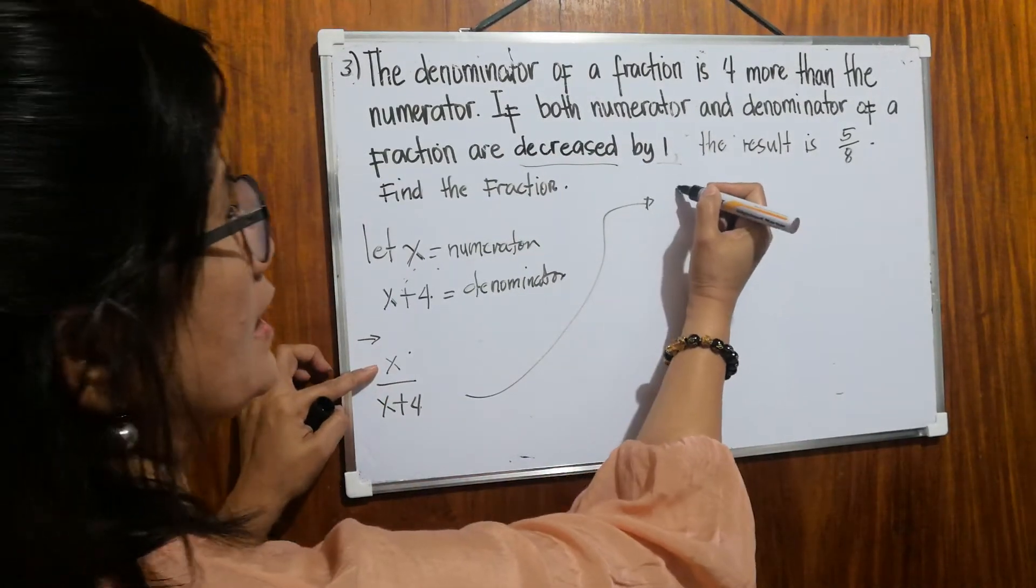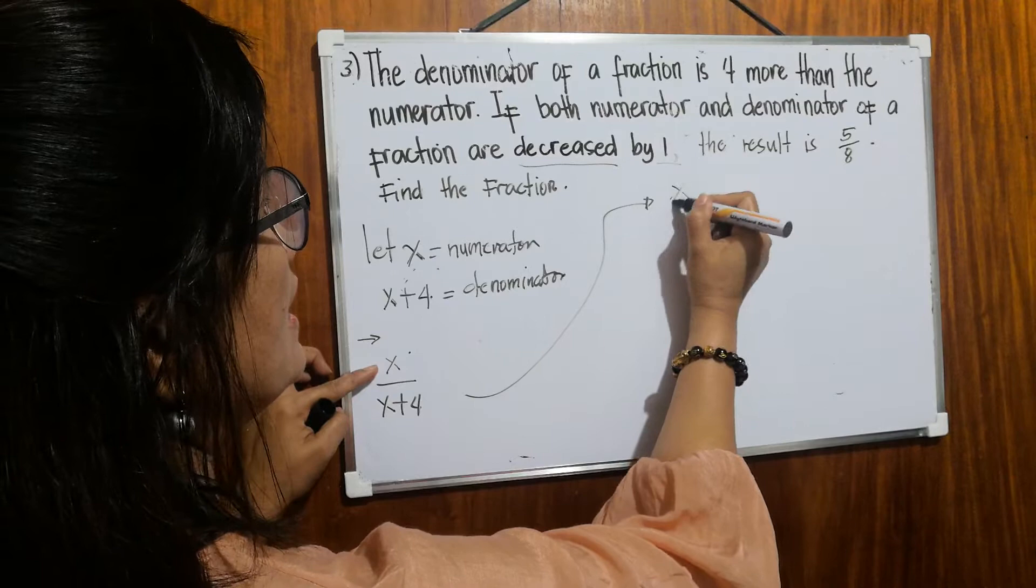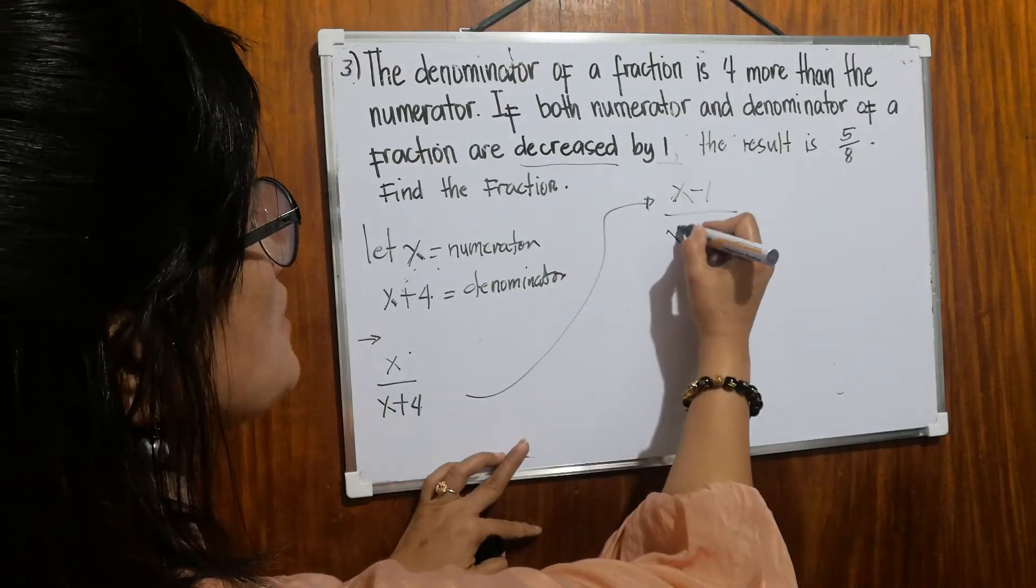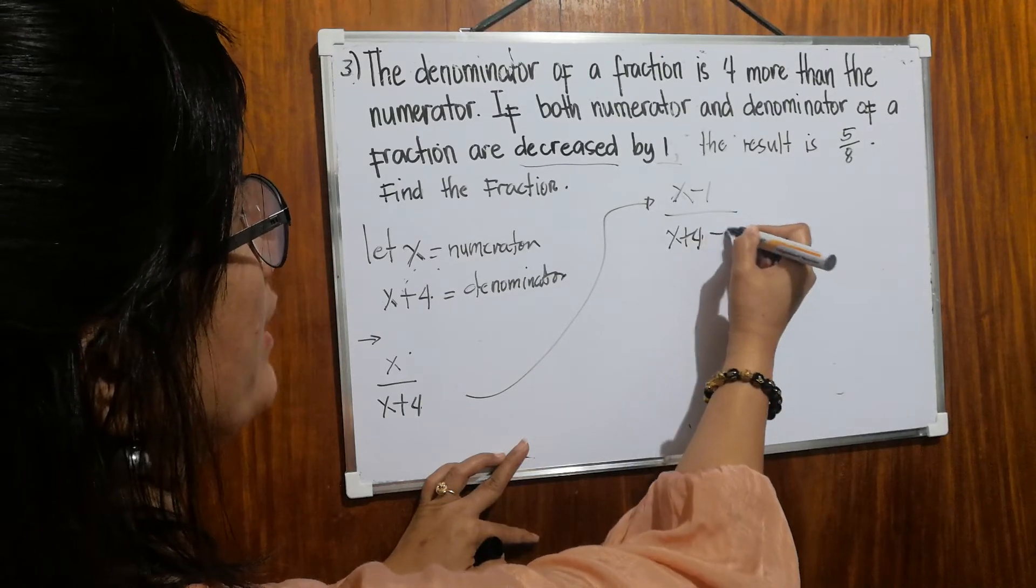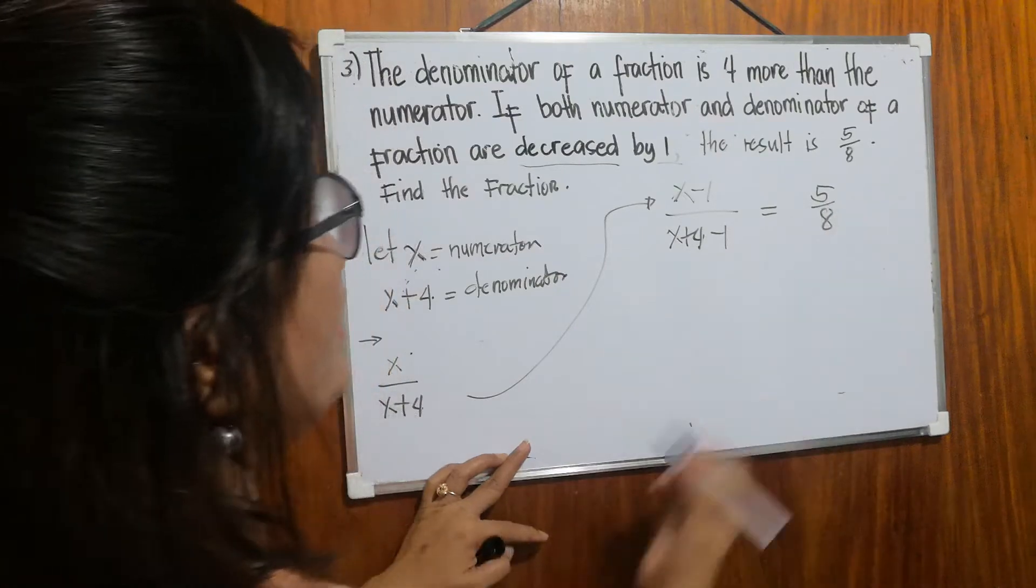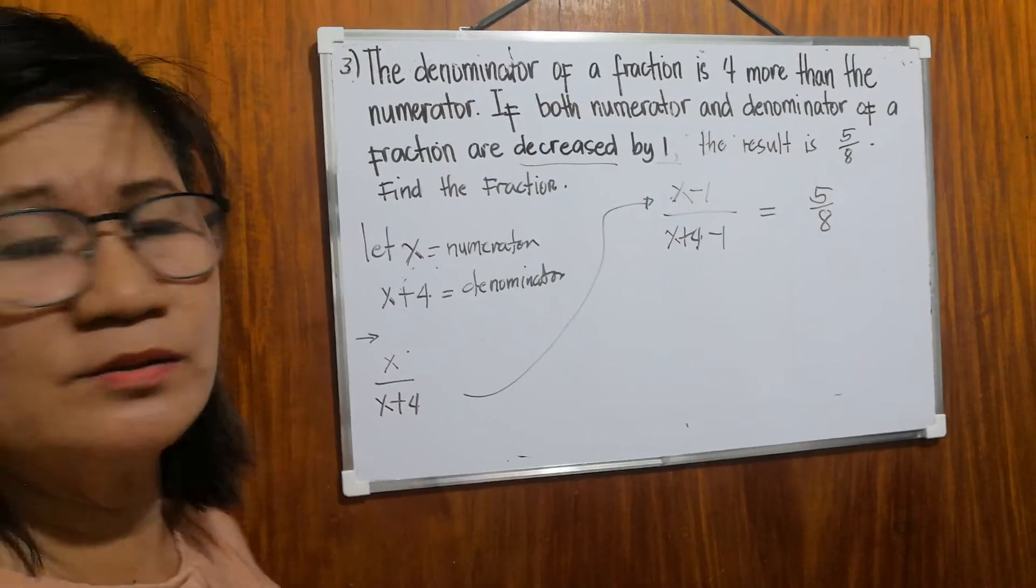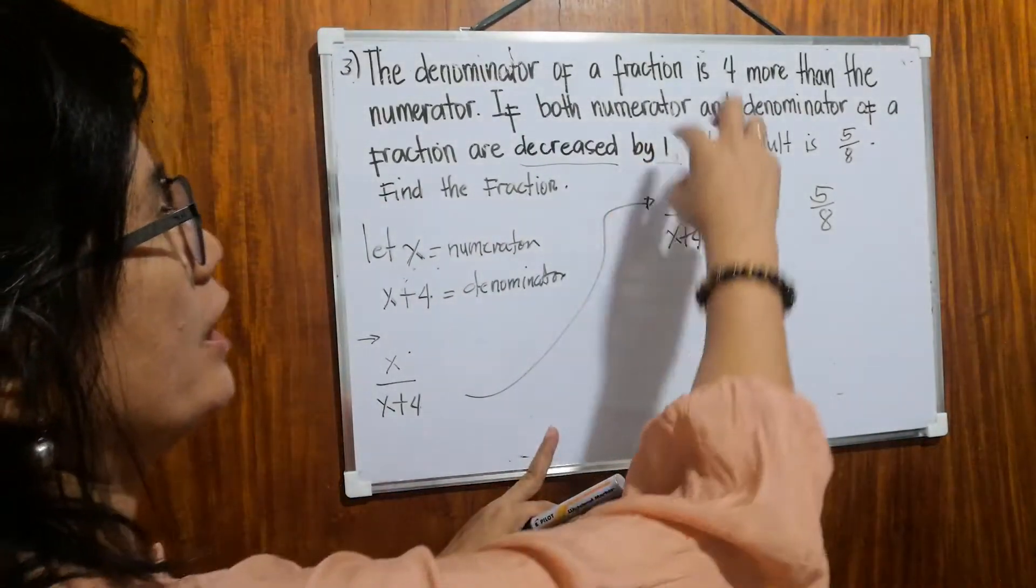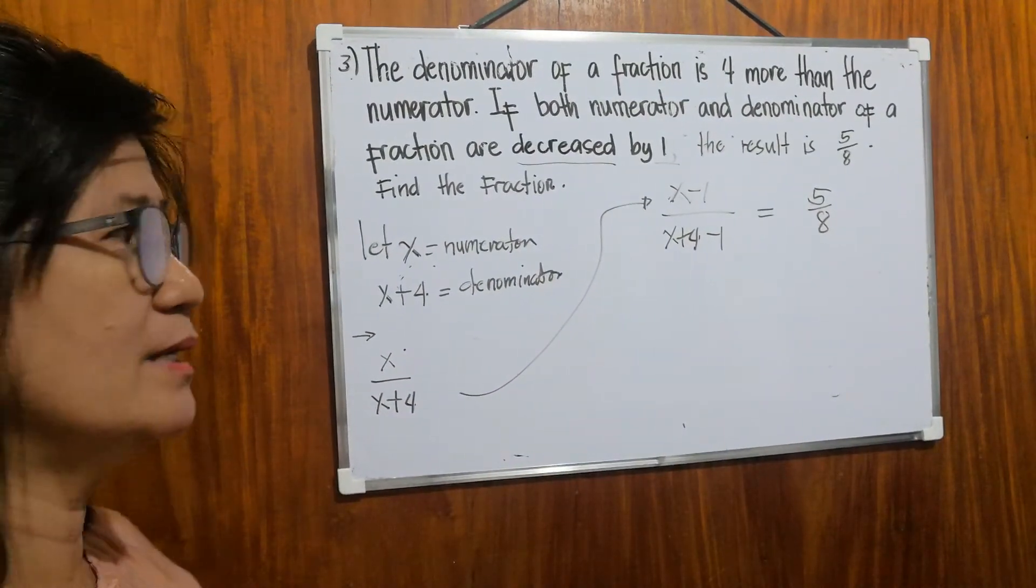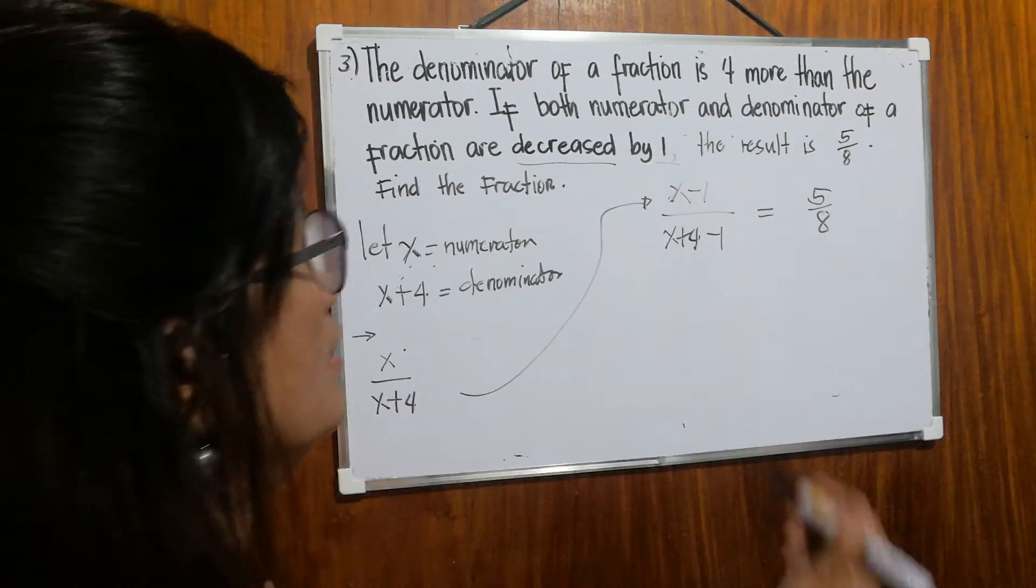So what happens, our numerator which was just x, will become x minus one. Over x plus four minus one. The result is five-eighths now. So why did we use minus one? Because it says if both numerator and denominator are decreased by one, that's why we have negative one.